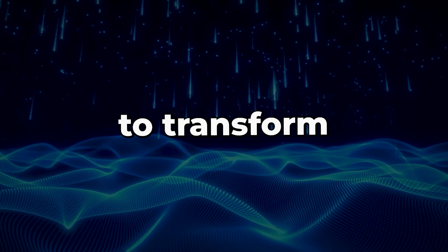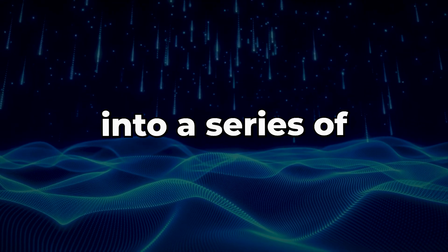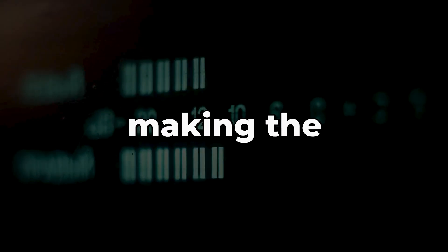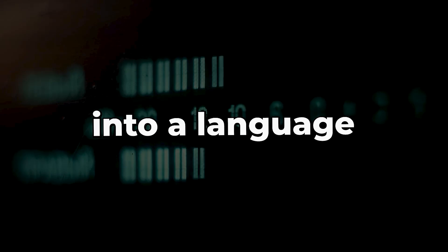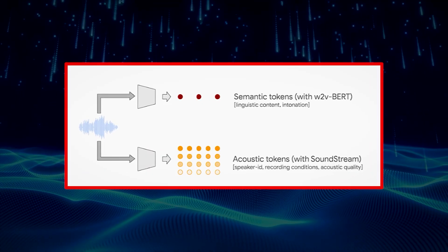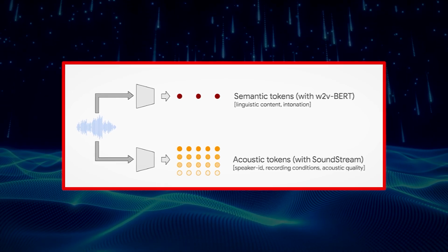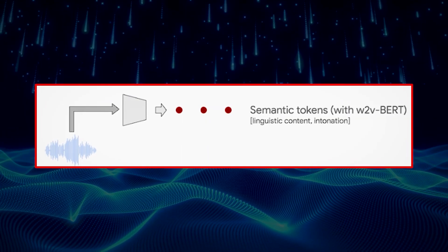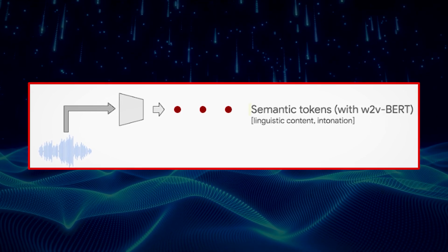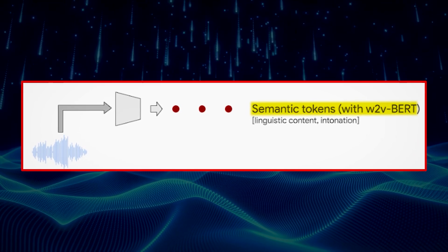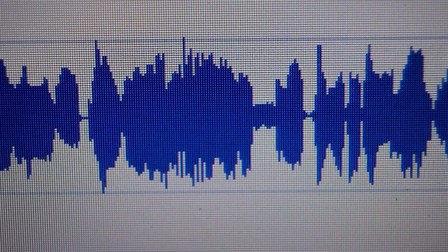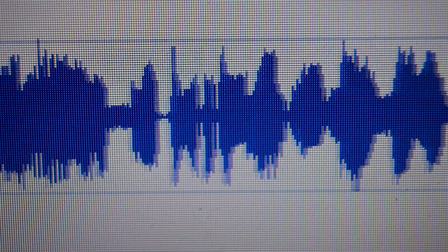Audio LM was used to transform the audio input into a series of discrete tokens, essentially making the challenge of audio generation into a language modeling task. These tokens were of two kinds: semantic tokens and acoustic tokens. The semantic tokens were created using a self-supervised audio model named W2V-BERT, which was incredibly good at capturing both the local and global structure of an audio signal.